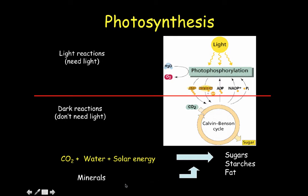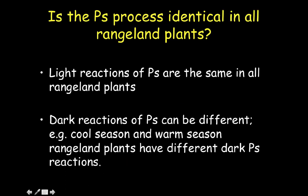So to summarize photosynthesis: it takes carbon dioxide, water, solar energy, and minerals as raw substrates from the soil to produce sugars, starches, and fats for the plant to survive. In rangeland plants, the photosynthetic process is similar but not identical across species. The light reactions are the same in all rangeland plants, going through the same upregulation pathways and gene expression. However, the dark reactions are where differences occur, and this is really what differentiates our cool season grasses from our warm season grasses.